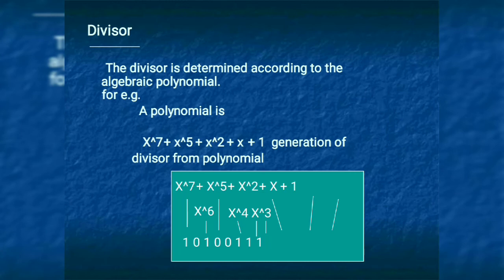The divisor is determined according to an algebraic polynomial. For example: x^7 + x^5 + x^2 + x + 1. From this polynomial, you determine the data depending on the coefficients: x^7 is present so data is 1, x^6 is absent so data is 0, x^5 is present so data is 1, x^4 absent gives 0, x^3 absent gives 0, x^2 present gives 1, x^1 present gives 1, and the constant 1 gives 1. The polynomial should be selected according to the rule: it should not be divisible by x, but should be divisible by x+1.